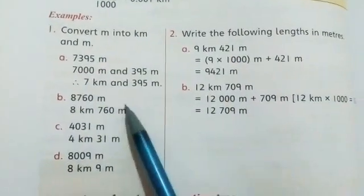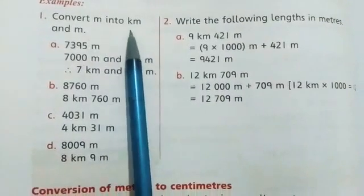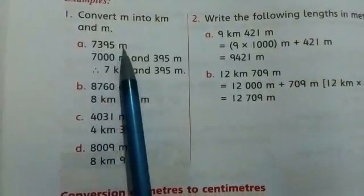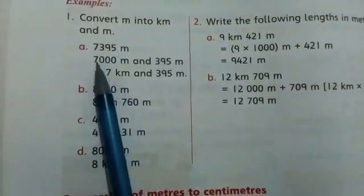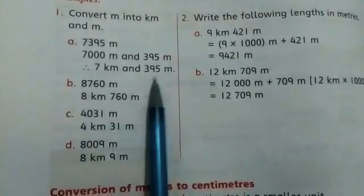Now look at these examples. You have to convert meters to kilometers and meters. How will we do it? For example, 7395 meters. What does it mean? 7000 meters and 395 meters. What does it mean? 7 kilometers and 395 meters, because 1000 meters equals 1 kilometer.